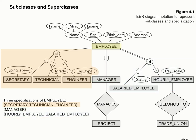The first thing to notice in this diagram are the pitchforks. This is a new symbol we haven't seen before. The pitchforks indicate 'I am a subclass of something,' and they always point towards the superclass. You can read the pitchforks as 'is a' — a secretary is an employee, a technician is an employee, an engineer is an employee.